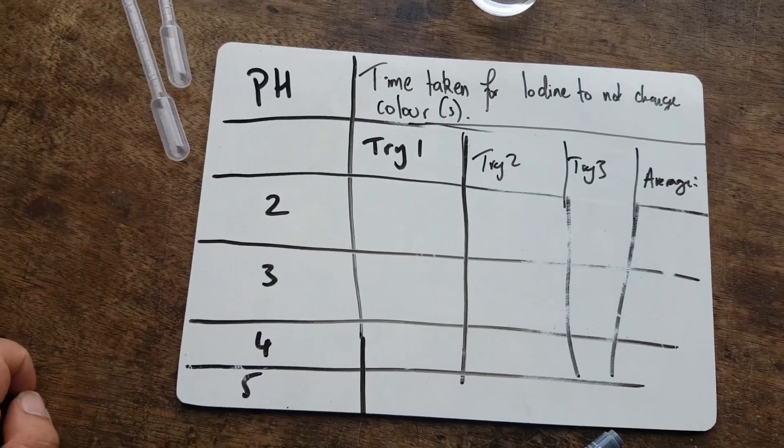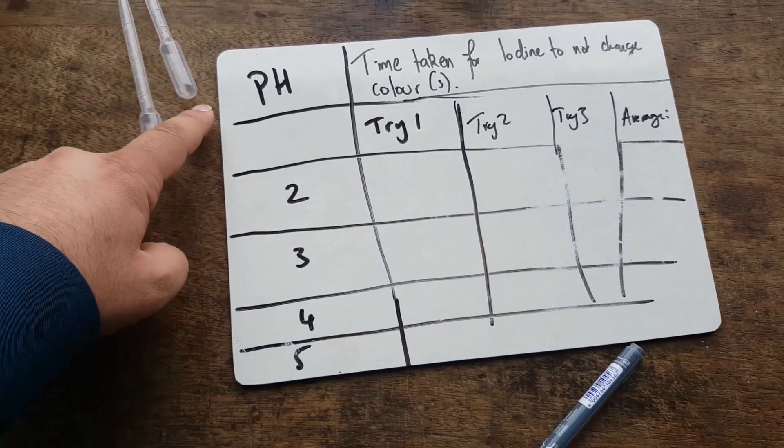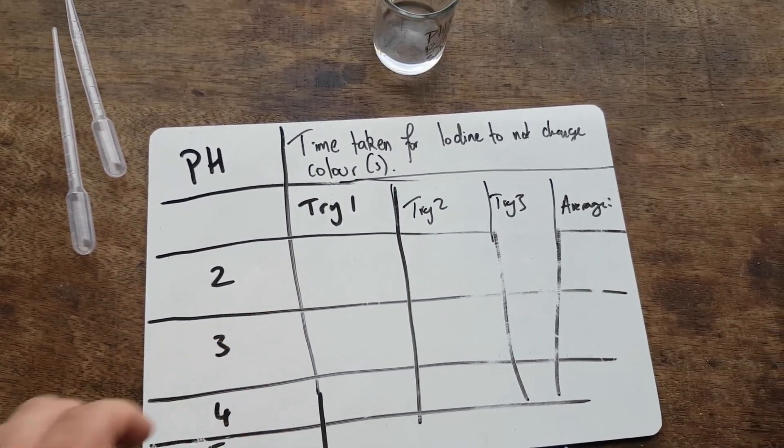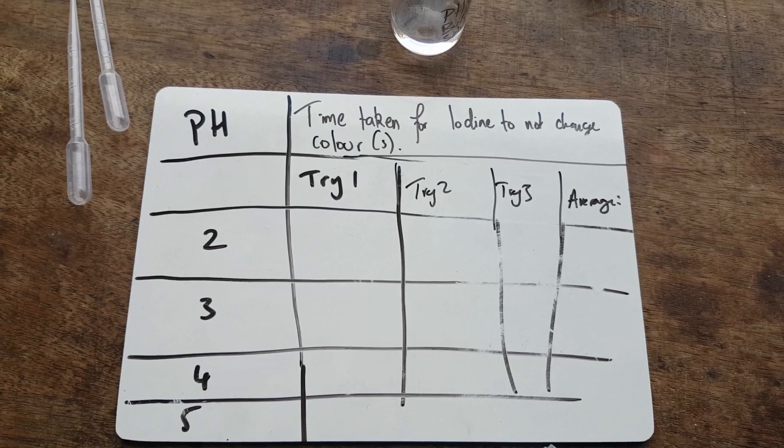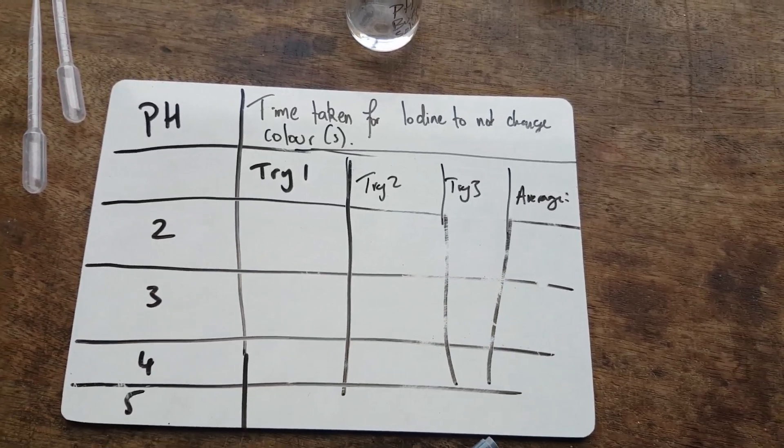While I'm waiting for that to acclimatise, here's my table that I'll do. Here's pH because our independent variable is always the one on the left-hand side. And time taken for iodine to not change color. I'm going to have three trials so I can work on an average. And the time needs to be in seconds.